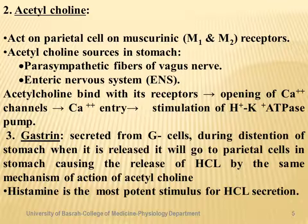Another transmitter is acetylcholine, which acts on parietal cell receptors called M1 and M2. Acetylcholine comes from two sources: extrinsic nerve stimulation via parasympathetic (vagus nerve) stimulation, and from the enteric nervous system. Acetylcholine binds its specific receptors, leading to opening of calcium channels in the parietal cell, calcium entry, stimulation of the hydrogen-potassium ATPase pump, and increased synthesis and release of hydrochloric acid.